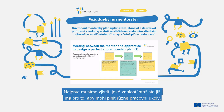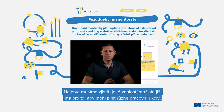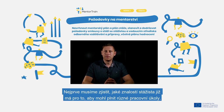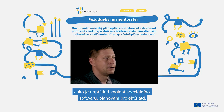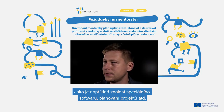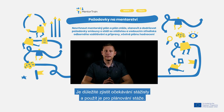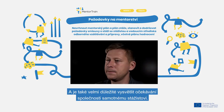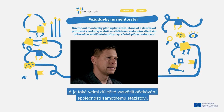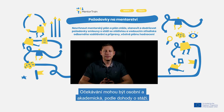Firstly, we must find out how much knowledge the apprentice already has to perform different work tasks, like knowledge about special software, planning projects, etc. It's important to find out the expectations of the apprentice and use that for planning the apprenticeship. And it's very important to explain the expectations of the company to the apprentice too. Expectations can be personal and academic, according to the training agreement.